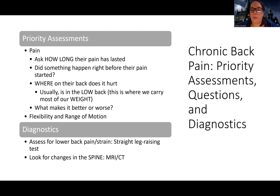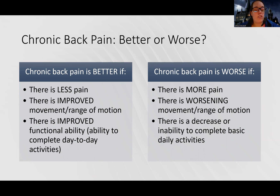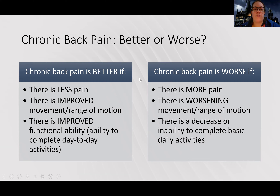Diagnostics-wise, we already talked about that. Chronic back pain better or worse is going to be similar to acute back pain — there should be less pain, improved range of motion, and ability to do those day-to-day tasks. Especially because this is chronic, there's a strong focus on how's their day-to-day going — how are they able to manage things? Things will be worse if the pain is worse, the range of motion and movement are worse, or if there's a decreased ability to complete their daily activities or activities of daily living.